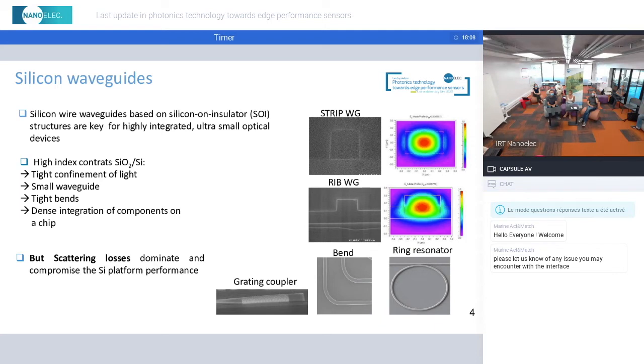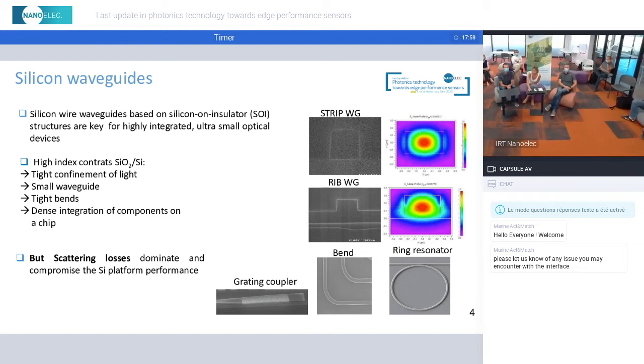But unfortunately, this high index contrast between silicon and silicon dioxide also leads to significant scattering losses, which compromise the silicon platform performance.